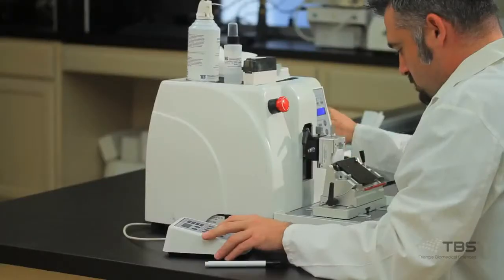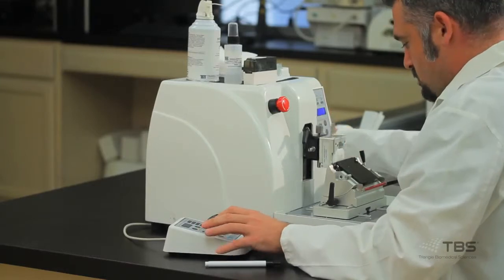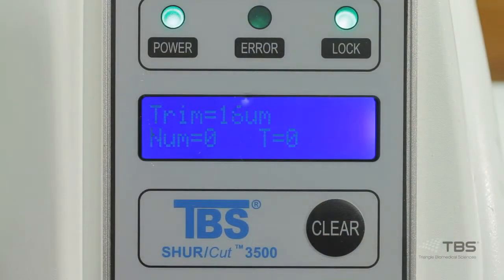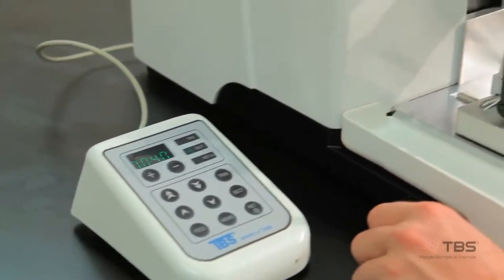To increase or decrease the thickness, simply press the plus and minus signs on the control panel. The specimen arm is easily advanced and returned by pressing the appropriate direction arrows. When switching from trimming to sectioning, the counter automatically resets.